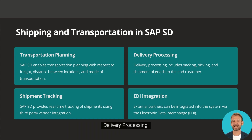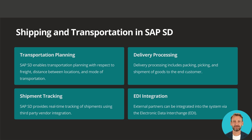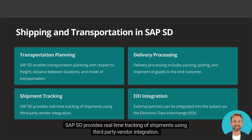Delivery Processing. Delivery processing includes packing, picking, and shipment of goods to the end customer. Shipment Tracking: SAP SD provides real-time tracking of shipments using third-party vendor integration.